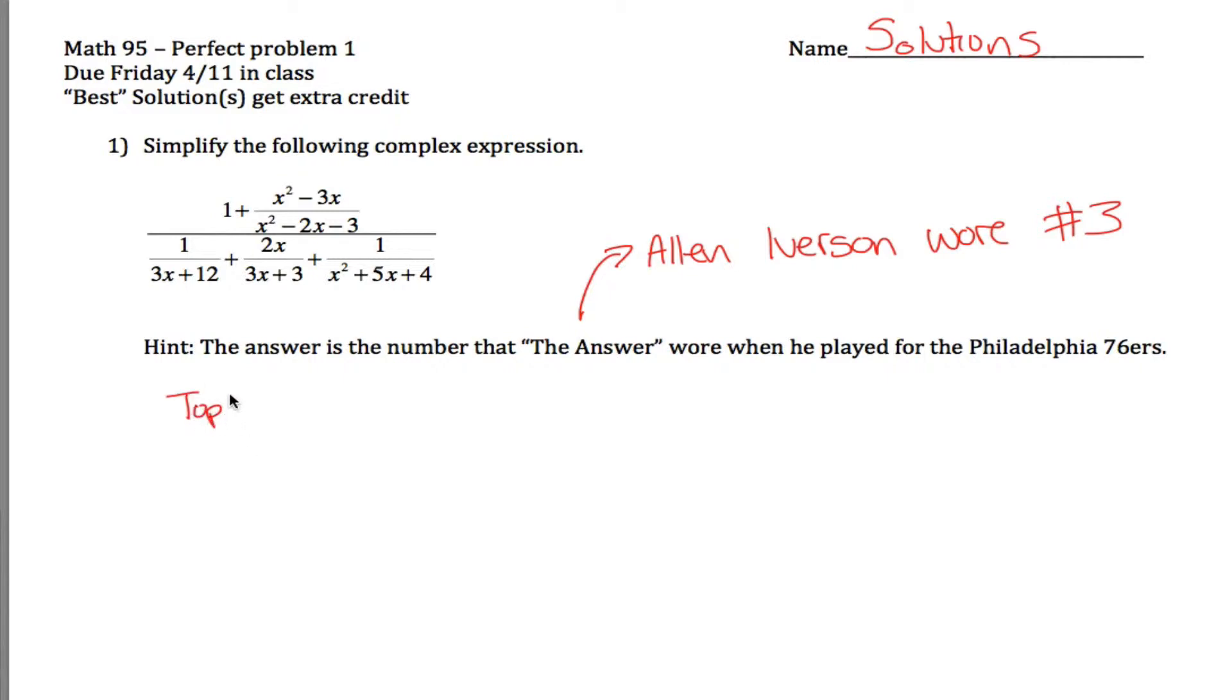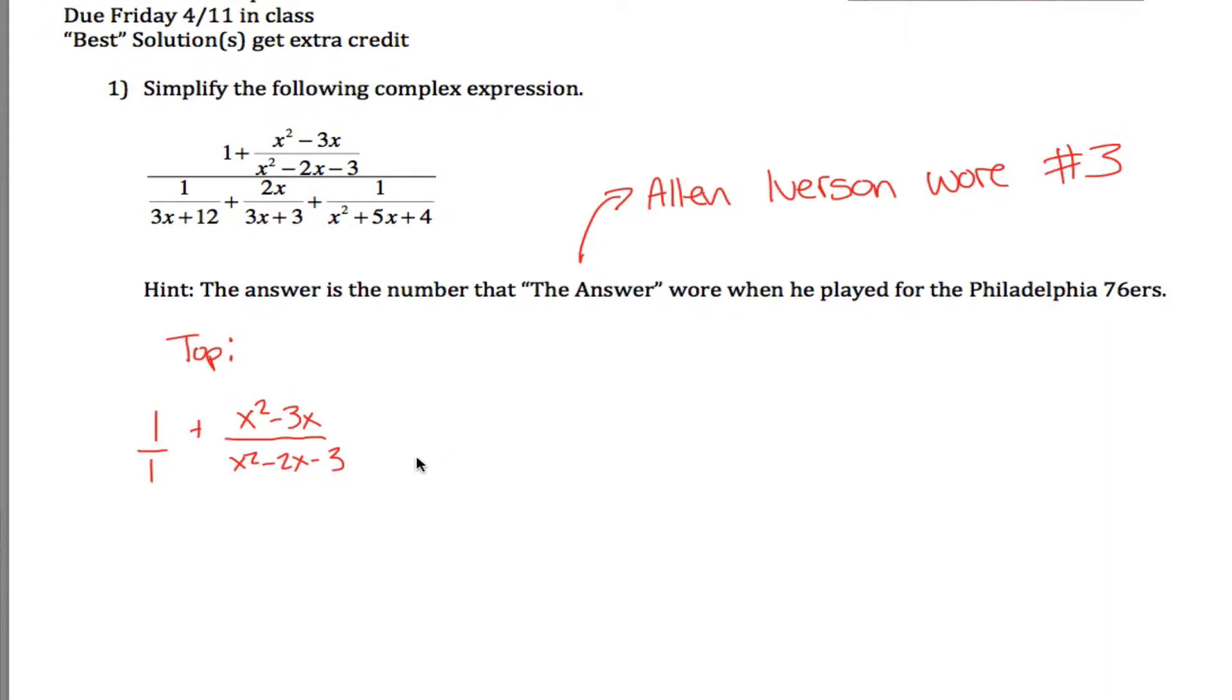I think it's easiest to break it down into pieces. The top here, I got 1 plus x squared minus 3x divided by x squared minus 2x minus 3. I would prefer to write this all as one term, one fraction. I can do it if instead of viewing this as 1, I view it as 1 divided by 1. And now I think about what I do when I'm trying to add two fractions together. If you're trying to add two fractions together, you need a common denominator. Multiply the top and the bottom here by x squared minus 2x minus 3.